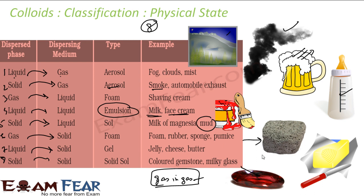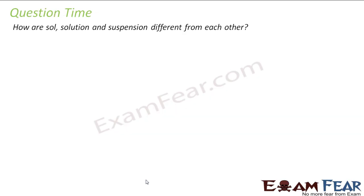Solid in solid — example is a colored gemstone or milky glass. So we have eight classifications of colloids. Try to look at things around you and classify them — are they a colloid, solution, or suspension? Most things around you are mixtures; pure substances are actually rare.